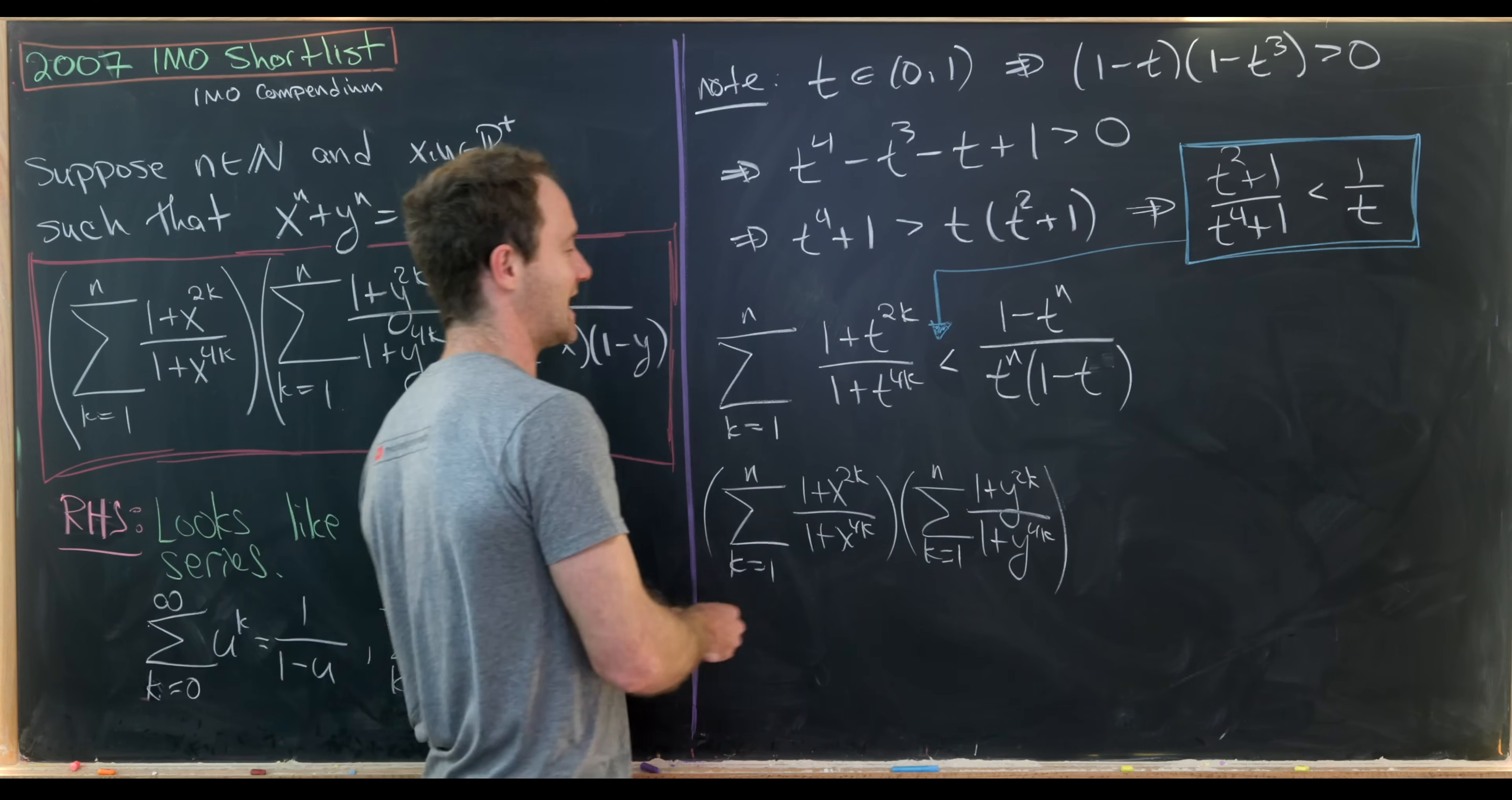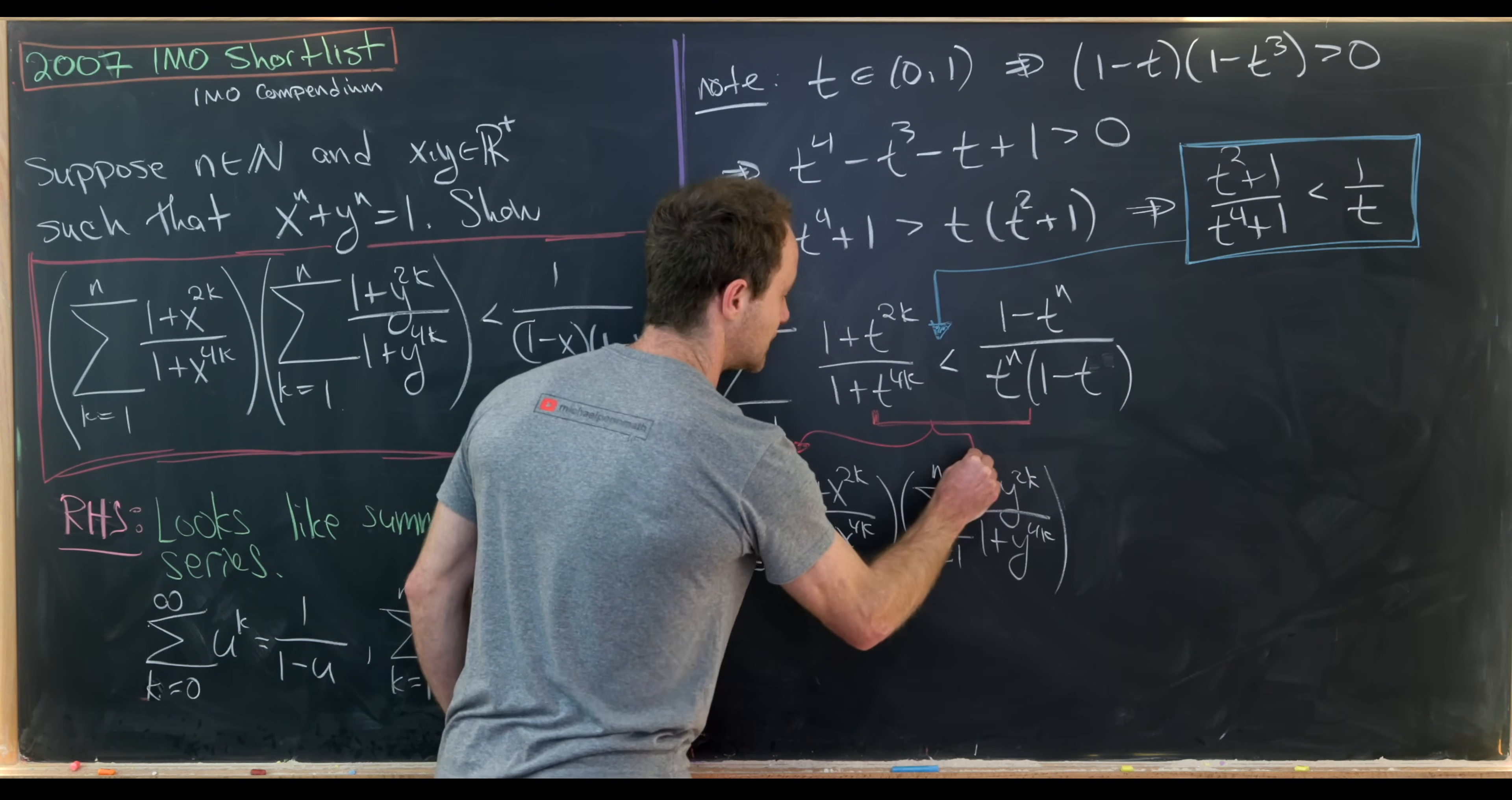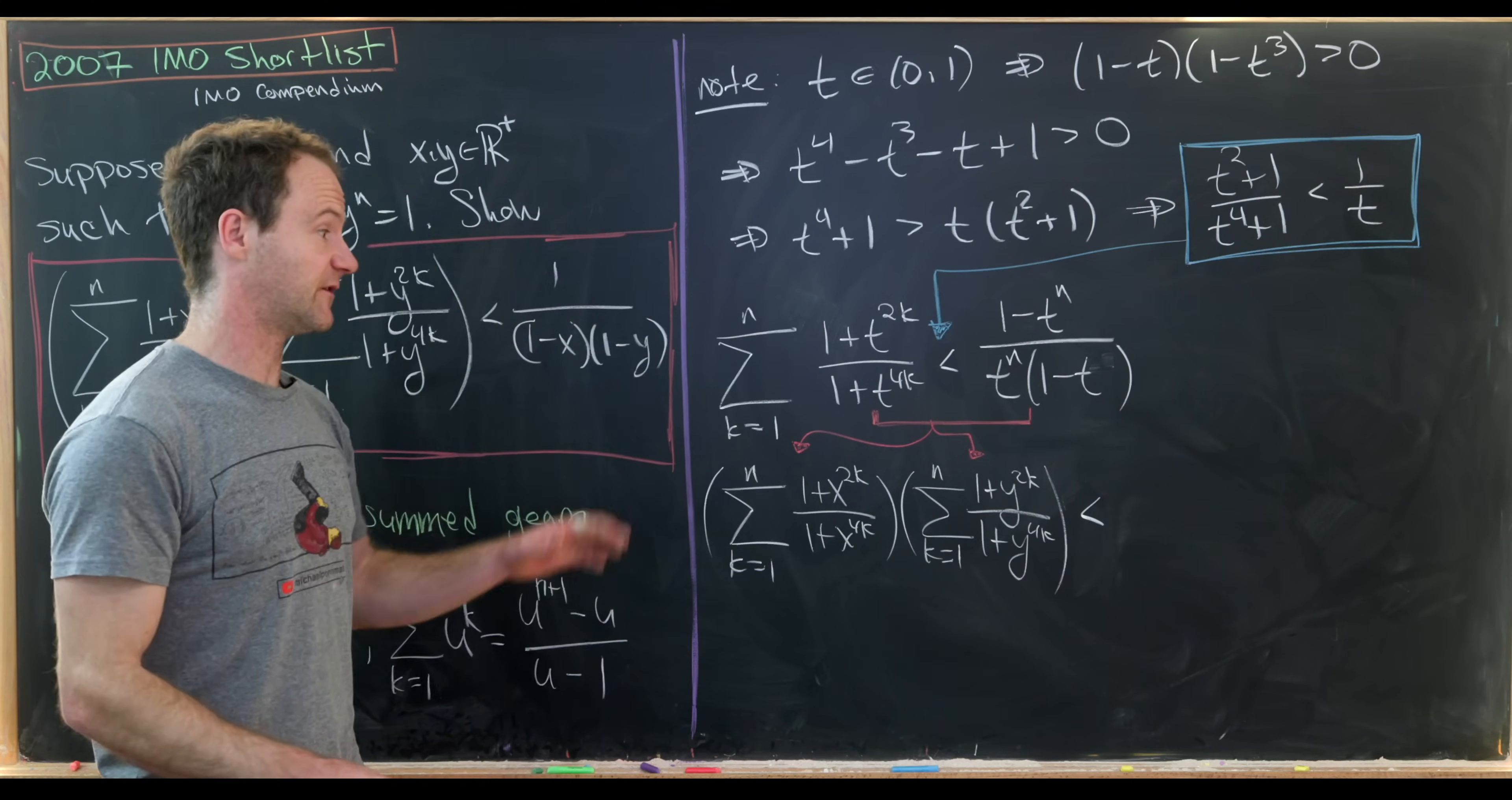And now what we'll do is take this inequality right here. So maybe I'll just write it with this red box or this red underline. We'll take this inequality and apply it to each of these terms, which I've written here, that form the left-hand side of our goal expression. So applying that inequality to each of those gives us the following.